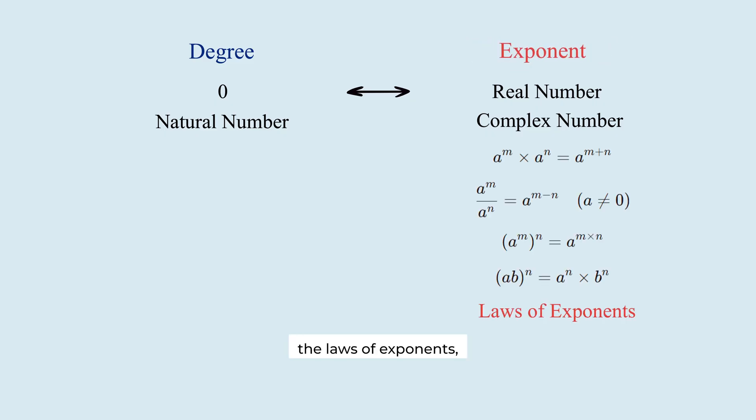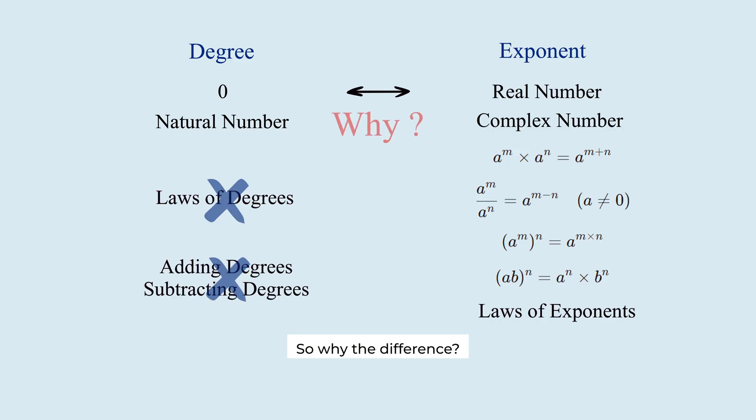Exponents have the laws of exponents. But there are no laws of degrees. We never talk about adding or subtracting degrees. So why the difference? Because they apply to different mathematical objects. That's the main idea to remember.